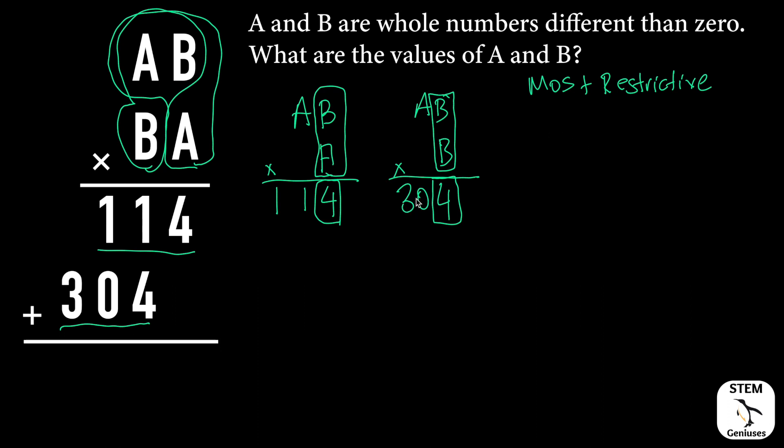I can start with B. Excluding zero, starting from one to nine, we have nine options to check. I check one by one. One times one is one, so it's not four. Two times two is four - yes, this could be our option.